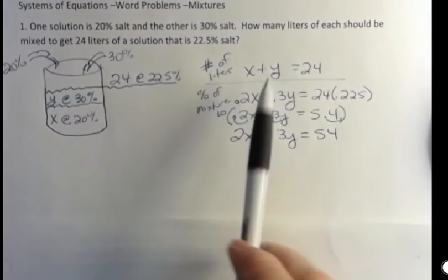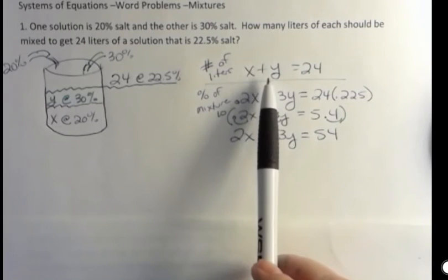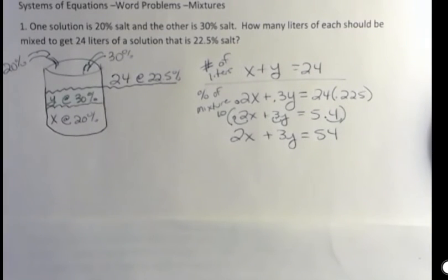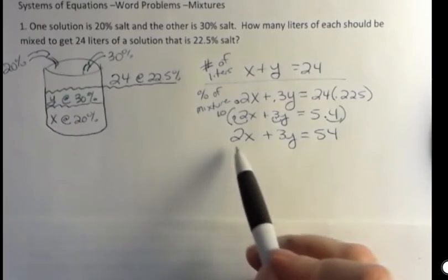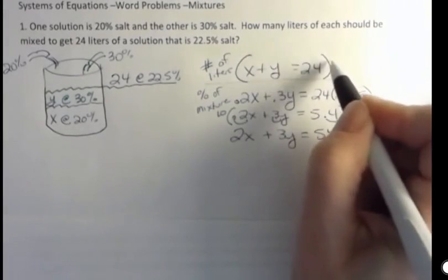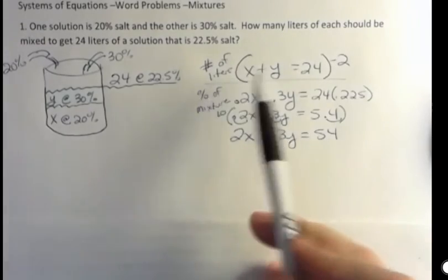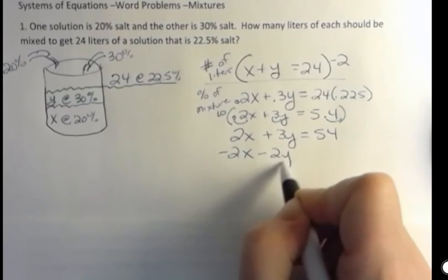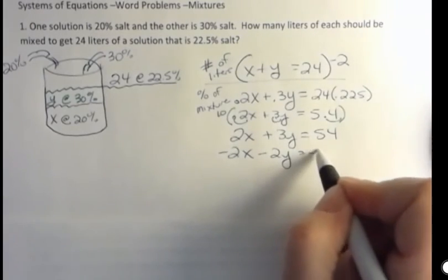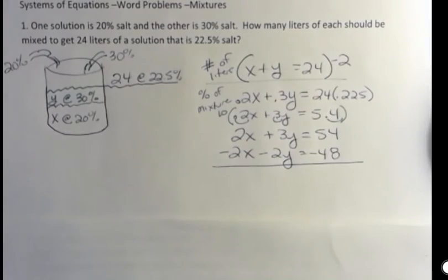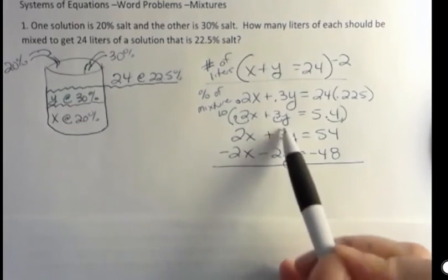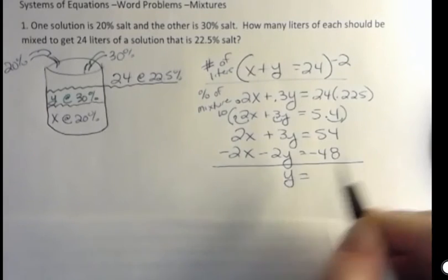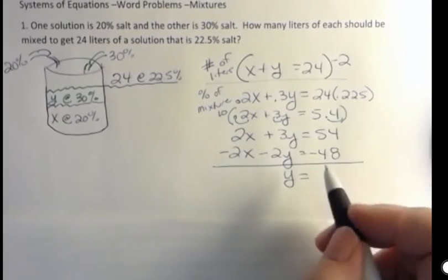And now your choice, you can rearrange this and use substitution, or you can multiply and get rid of that by elimination. And I'm going to use elimination in the first one. I've got a second example where I'll use the other method. So I want to eliminate the X's. I'm going to multiply everything in this equation by negative 2. Negative 2 times X, negative 2X. Negative 2 times Y, negative 2Y. Negative 2 times 24 is negative 48. And now I can add those together because the X's will drop out. And I get Y equals 54 minus 48 is 6.